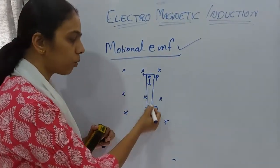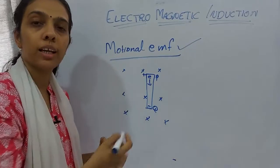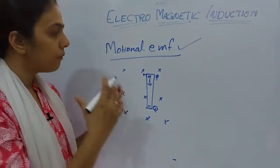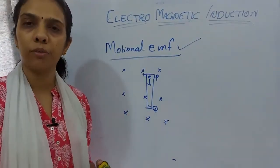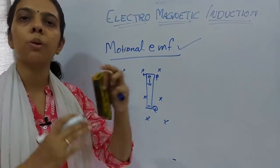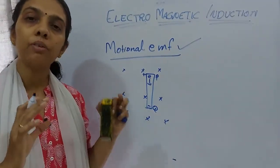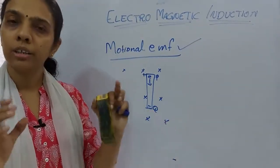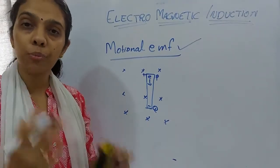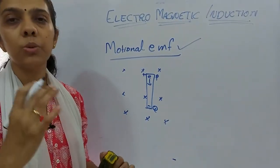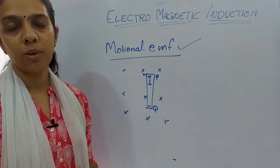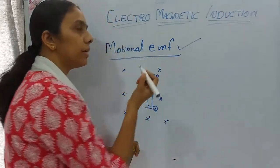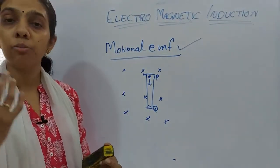Electrons keep moving toward one side, creating positive charges on the other side. This process continues until the electric force equals the magnetic force. The EMF induced in this way — due to the movement of the conductor in the presence of a magnetic field — is called motional EMF.